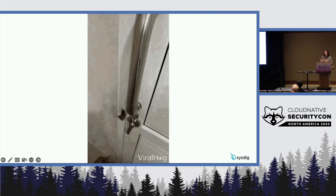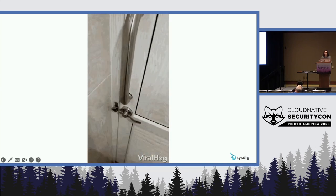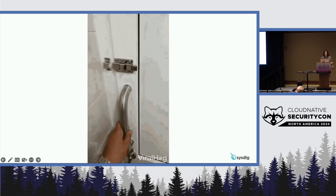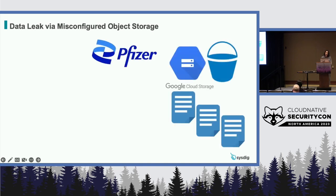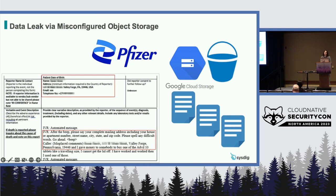Lateral movement happens in almost every cloud breach we see. For attack number four, think about what happens when the security controls that are supposed to be in place don't work as intended — a good example being object storage misconfiguration, mainly because customers are trusting us to store their data responsibly. Pfizer was found to have multiple exposed files on a misconfigured Google Cloud Storage bucket. These files contained transcripts between Pfizer customer support and customers of various Pfizer drugs — with very sensitive information including home address, phone number, email, and medical and health data pertaining to those drugs.